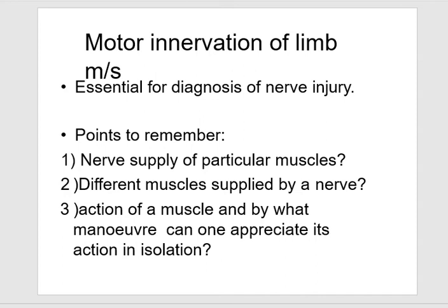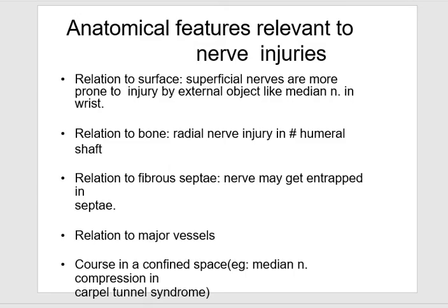Motor innervation of limb muscles is essential for diagnosis of nerve injury. Points to remember: the nerve supply to a particular muscle, the muscle supplied by the nerve, and the action of a muscle — by what maneuvers can one appreciate its action in isolation. Anatomical features relevant to nerve injuries: relation to surface — superficial nerves are more prone to injury by external objects, like the median nerve at the wrist; relation to bone — radial nerve injury in fracture of the humeral shaft; relation to fibro-osseous canals — nerve may get trapped; relation to adjacent vessels and force in a confined space, for example median nerve compression in the carpal tunnel.